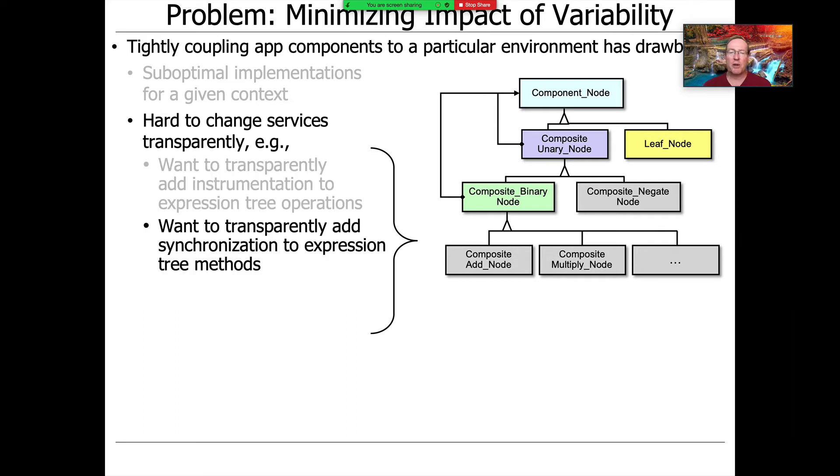Likewise, we might also want to transparently add synchronization. If we use our expression tree in multiple threads, we don't want its internal data structures corrupted when accessed from multiple threads. Those are examples where you're changing the service to be an instrumented expression tree or a synchronized expression tree.